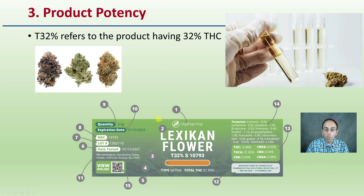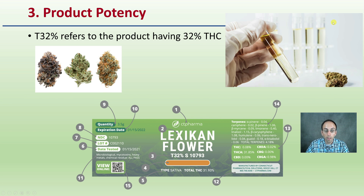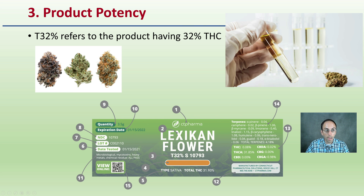Working our way down to number three, we have the product potency. The T32% here refers to the product having 32% THC, and that would be officially confirmed by lab testing — we'll talk a little more about that. There are ways to visually inspect flowers, but this is looking at the actual percent of THC generated from a third-party lab.